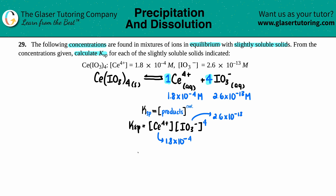Let's plug it in and solve. Ksp equals 1.8 times 10 to the negative fourth, times 2.6 times 10 to the negative 13th, and that one has to be raised to the fourth. You could do this all in the calculator in one shot or break it up — I'm going to do it in one shot.